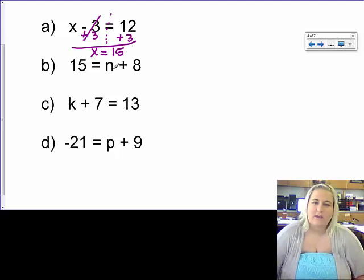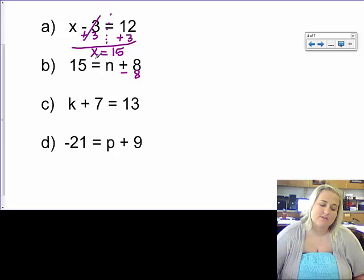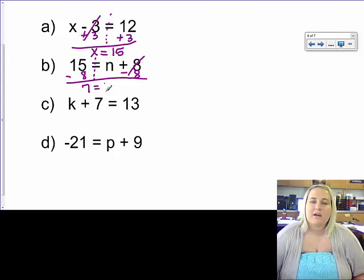Same thing here. My n is on the right side. It does not matter which side it's on. I still want to get everything away from it. If n is here and 8 is being added to it, the opposite of adding 8 to n would be to subtract 8 from n. And what I do to one side of the equal sign, I must do to the other side. So I'm going to subtract 8 from this side. So those will cancel out. 15 minus 8 is 7. And bring everything else down. So I know that n must be equal to 7.